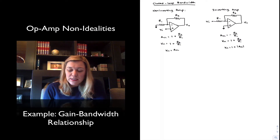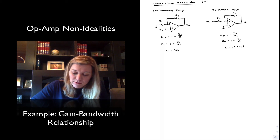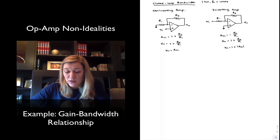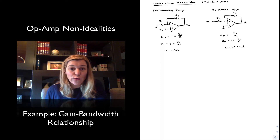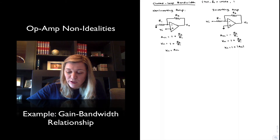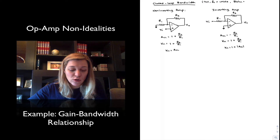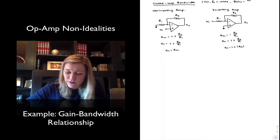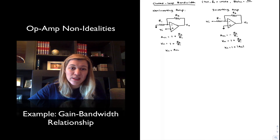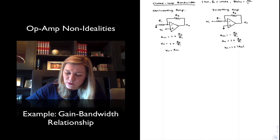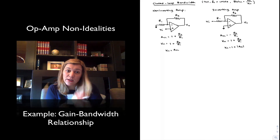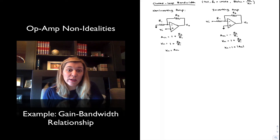Let's imagine that these are 741 op-amps, which have a transition frequency of 1 megahertz, or 10 to the 6 hertz. We're going to perform closed-loop bandwidth calculations for different values of gain. The closed-loop bandwidth can be expressed as the unity gain frequency divided by the noise gain.